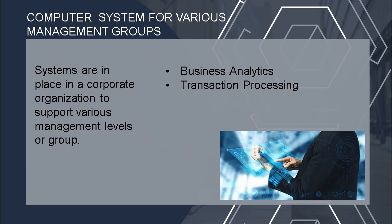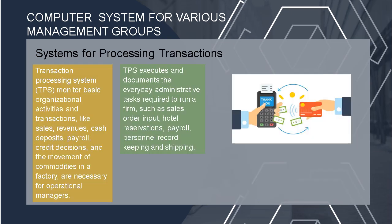Computer systems for various management groups. Systems are in place in a corporate organization to support various management levels or groups, including business analytics and transaction processing. The transaction processing system, or TPS, monitors basic organizational activities and transactions like sales, revenue, cash deposits, payroll, credit decisions, and the movement of commodities in a factory, which are necessary for operational managers.